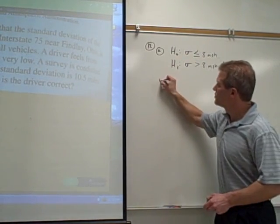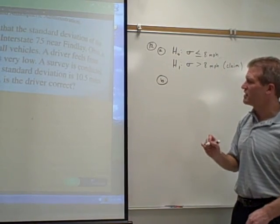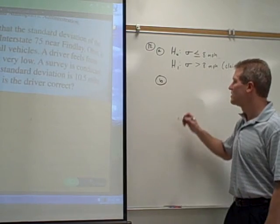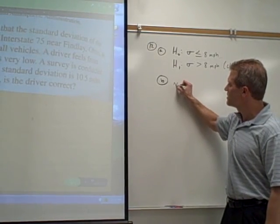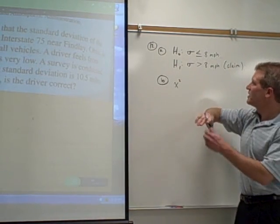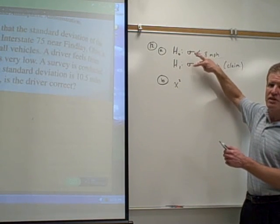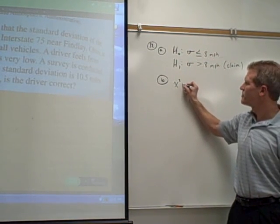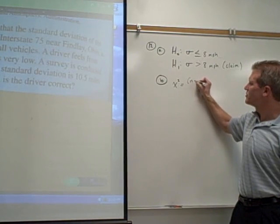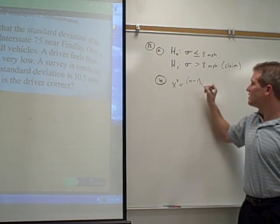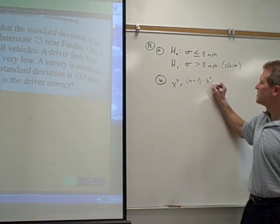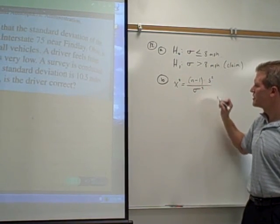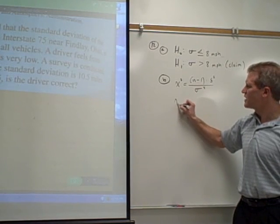All right, step B. We're going to use the p-value method. The p-value method, you don't have to find the critical values. You go right to your test value. Your test value is going to be, in this case, a chi-squared value. Any time that you're making a hypothesis about a variance or standard deviation, use the chi-squared formula and the chi-squared chart. So the formula is n minus 1, your sample size minus 1, times your s-squared, your sample variance, over sigma-squared, your population variance.